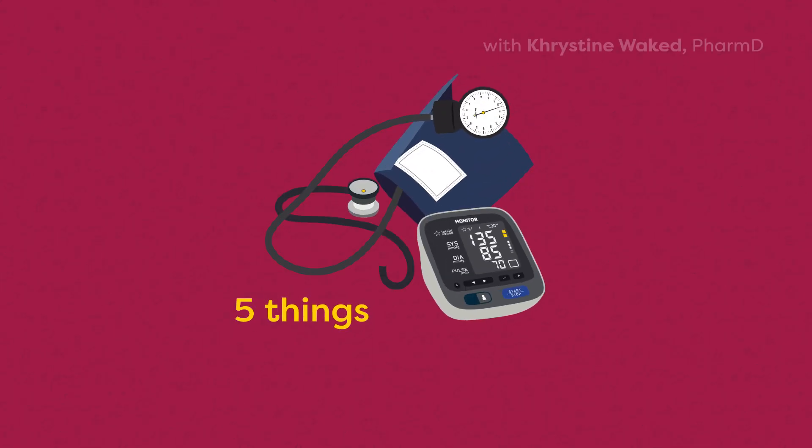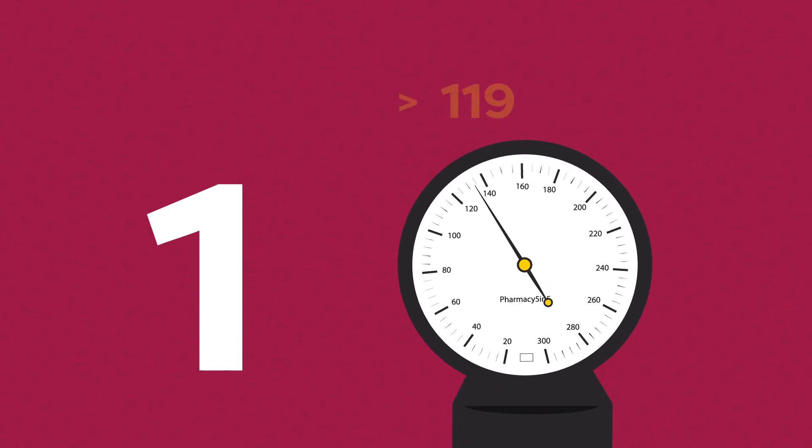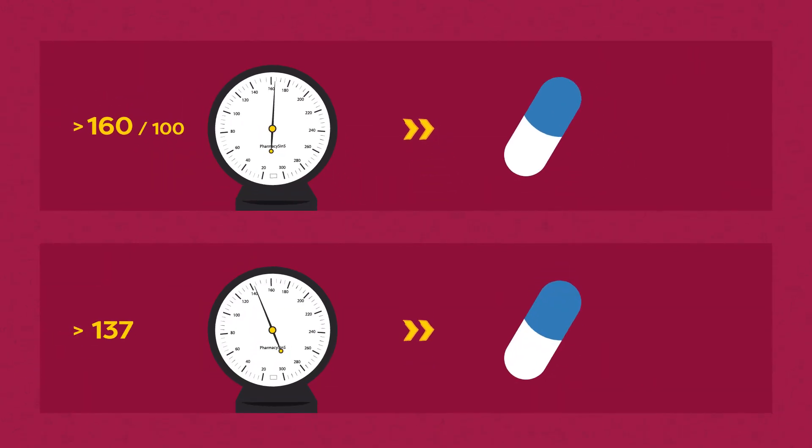Here are five things healthcare professionals should know about hypertension. First, for patients who have a blood pressure above 160 over 100, consider starting a drug. A drug should be started at 140 over 90 for patients who have a higher risk of a heart attack or stroke.